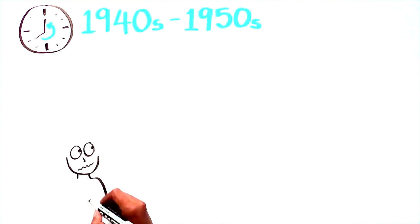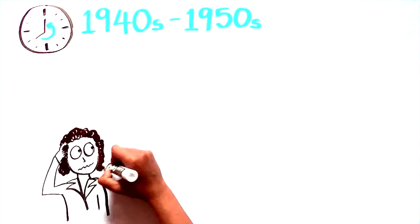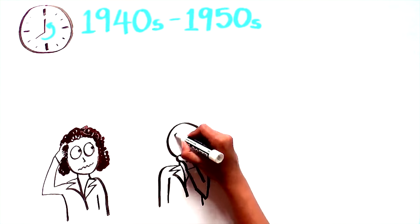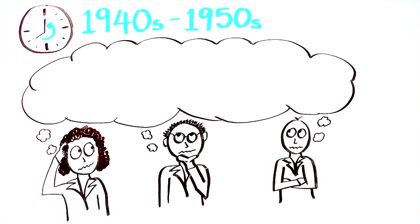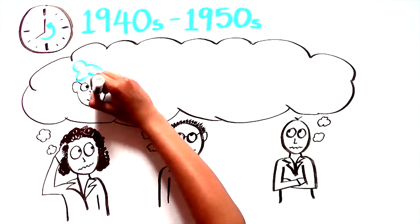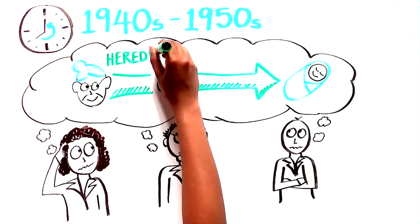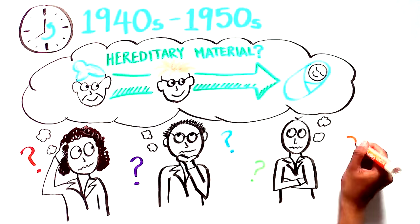Turning the clock back to the 1940s and 50s, the scientific community was in the midst of a debate about the nature of the hereditary material that is responsible for passing our traits on to our children, to our children's children, and so on for generations. Pretty existential question, right?